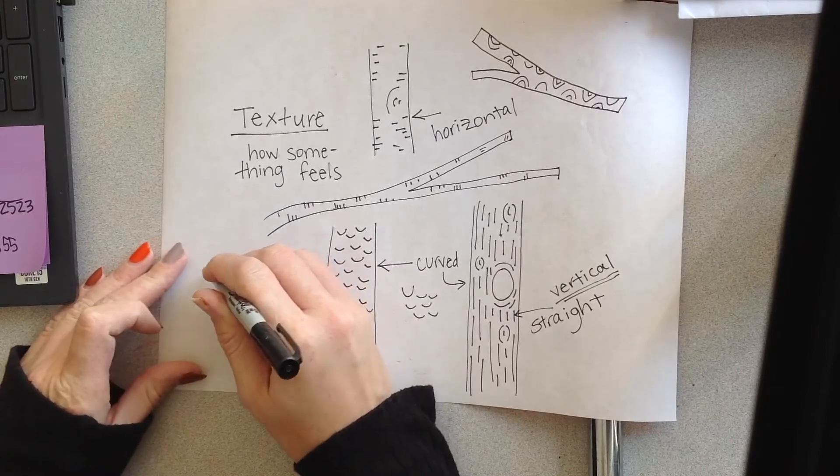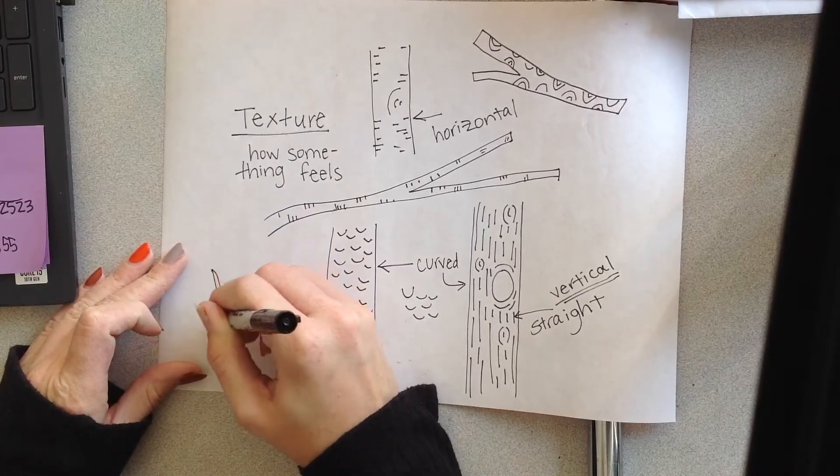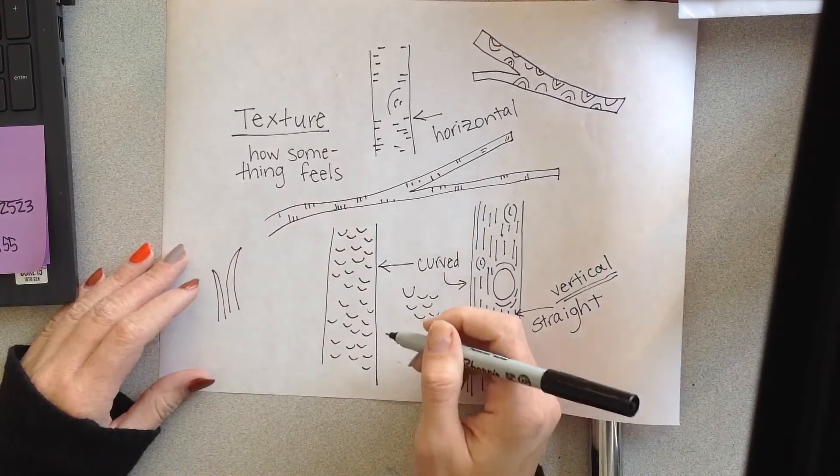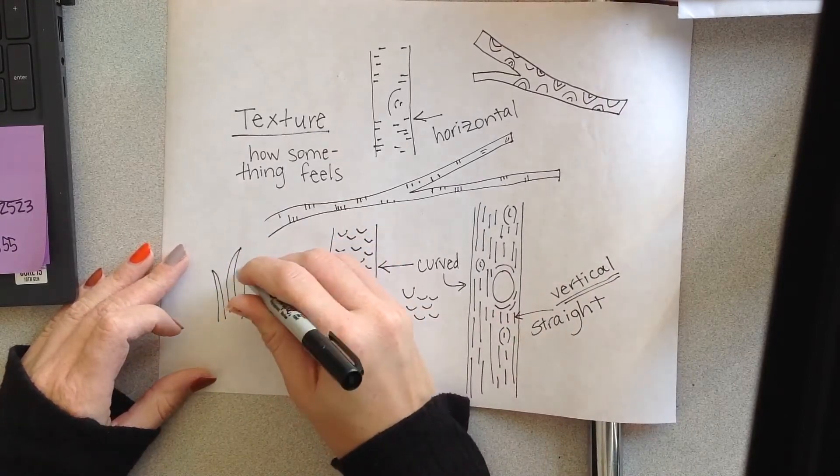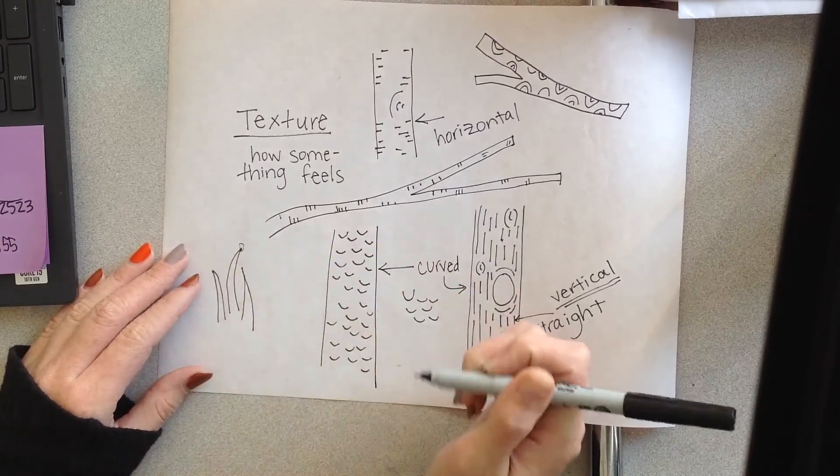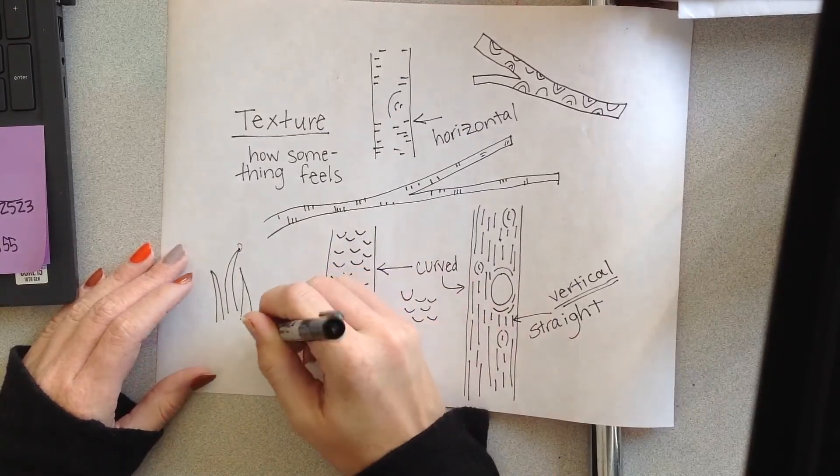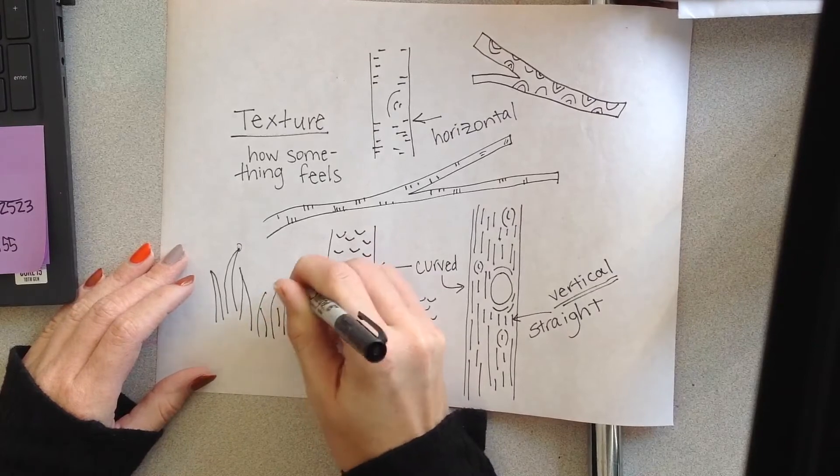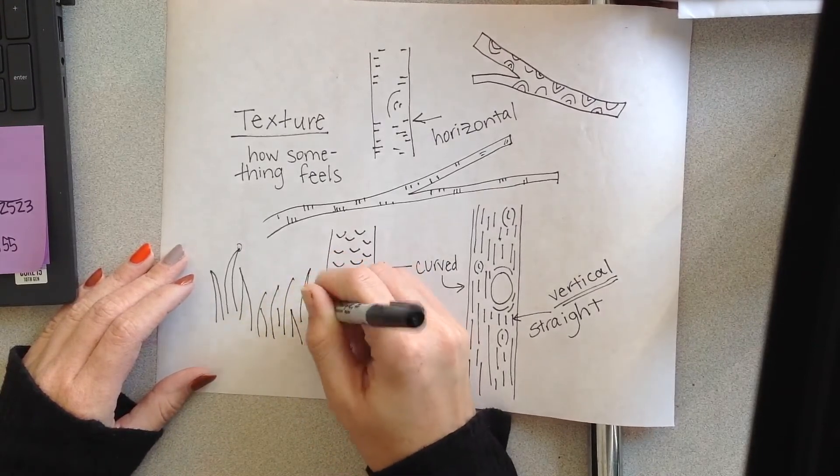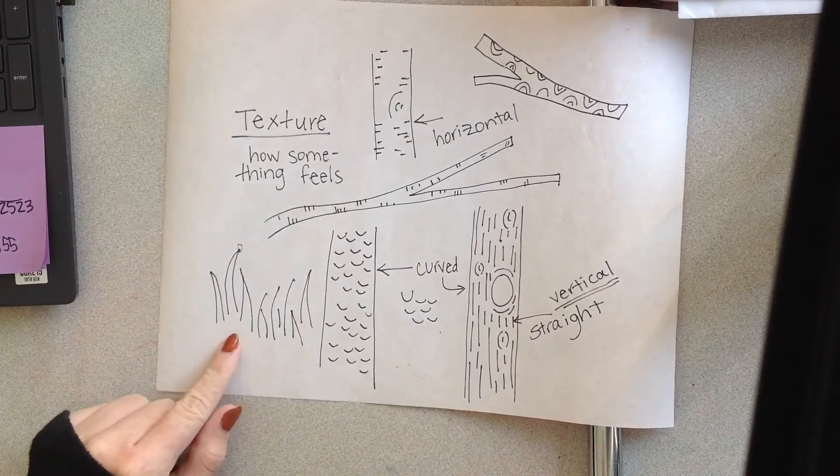The other thing we need to practice drawing is lines for our grass. In the book, sometimes the grass looked like this. It was two lines put together that come to a point, or it was just straight lines. So you can do both. You can do one or the other. You can choose what you want to do for your grass.